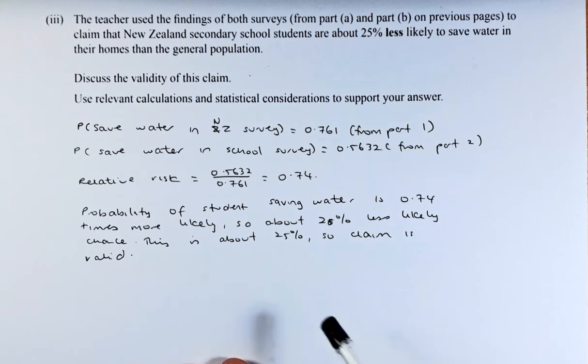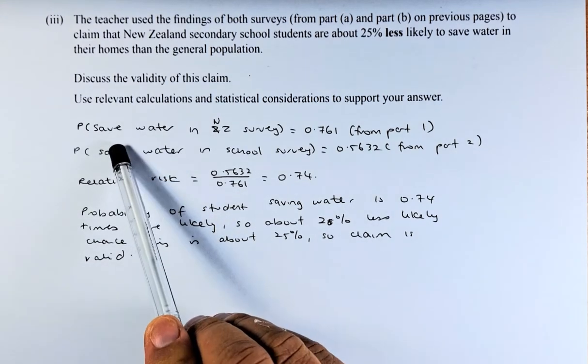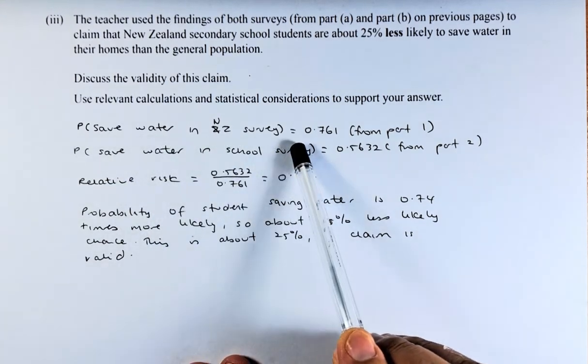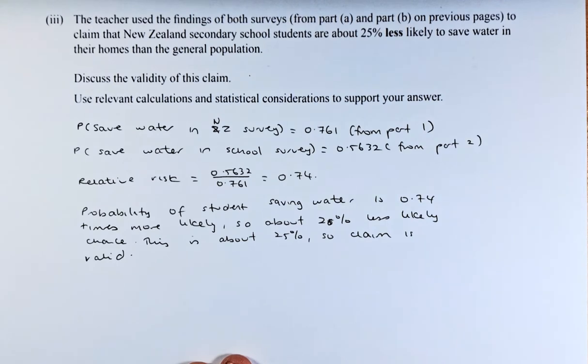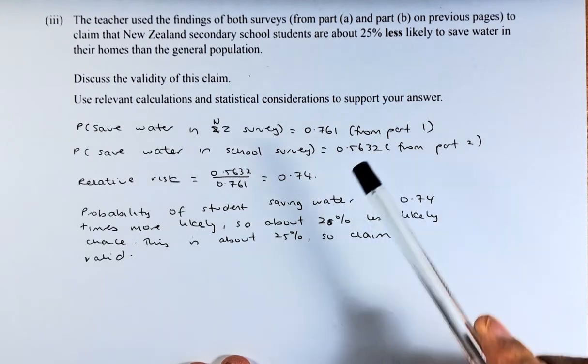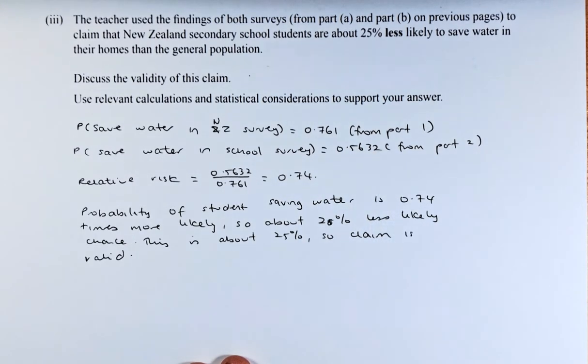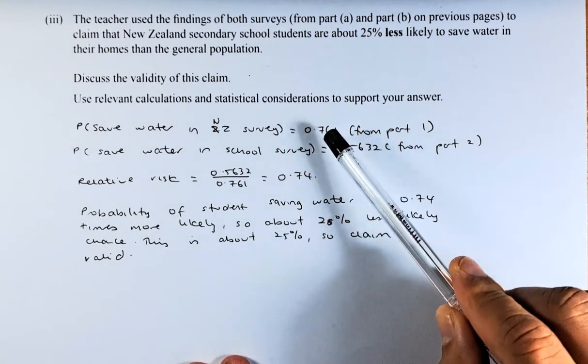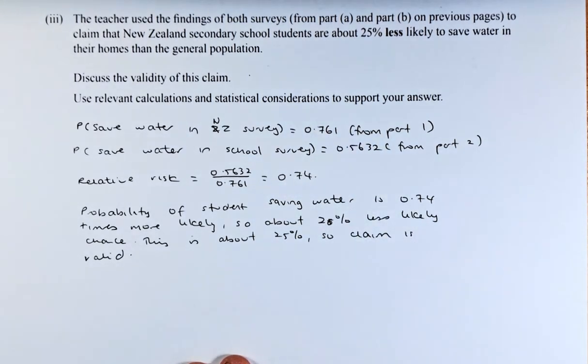Referring back to the first part, probability that saved water in New Zealand survey was 0.761. That was from part 1. Probability that saved water in the school survey, the answer was 0.5632. If we calculate the relative risk, we take this number divided by that number is 0.74.